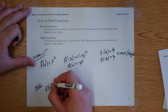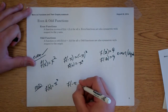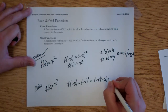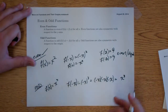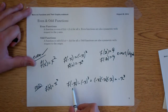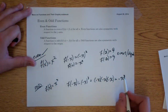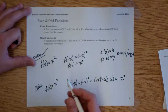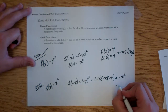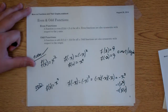For odd functions, we'll look at f(x) equals x cubed. If we put in negative x, we get negative x cubed, which is negative x times negative x times negative x. Negative times negative is positive, times negative is negative, so we get negative x cubed. When we put in the opposite value for x, we get out negative f(x) — the exact opposite. Negative x cubed is just negative 1 times x cubed, which is negative 1 times our original f(x). That confirms it is an odd function.